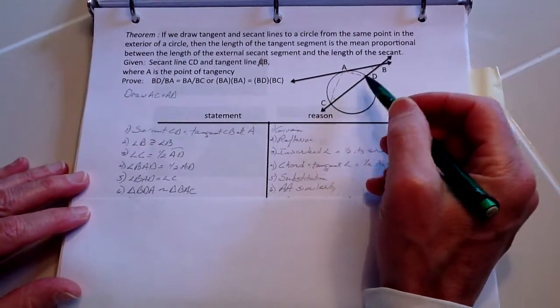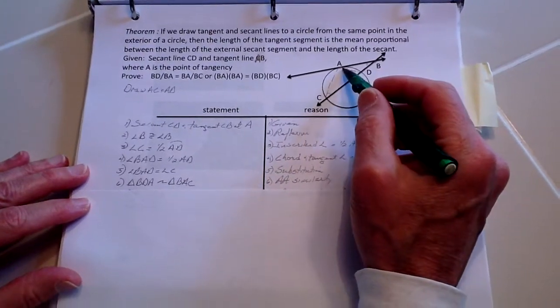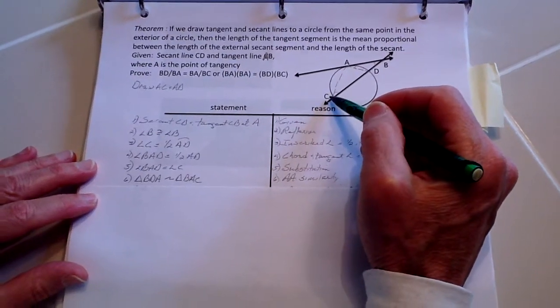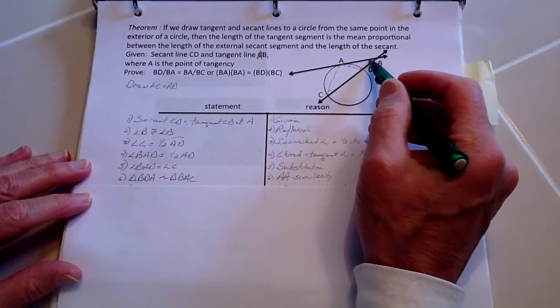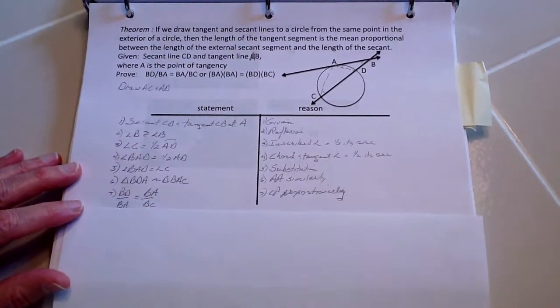From that we know that triangle BDA is going to be similar to triangle BAC. And that's because of angle-angle. We have this angle and then these two angles. Angle-angle similarity.